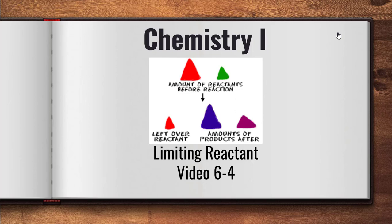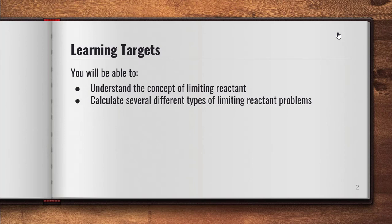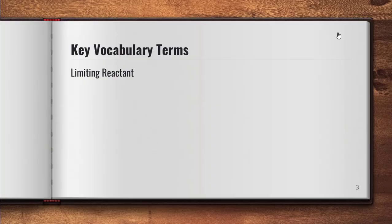Really what it is is two stoichiometry problems in one. You convert them both to the product and then whichever one is less is the actual amount that is produced. It's a pretty straightforward concept. Hopefully by the end of the video today you should be able to understand the concept of limiting reactant and also be able to calculate several different types of limiting reactant problems. The key vocabulary term here is limiting reactant.